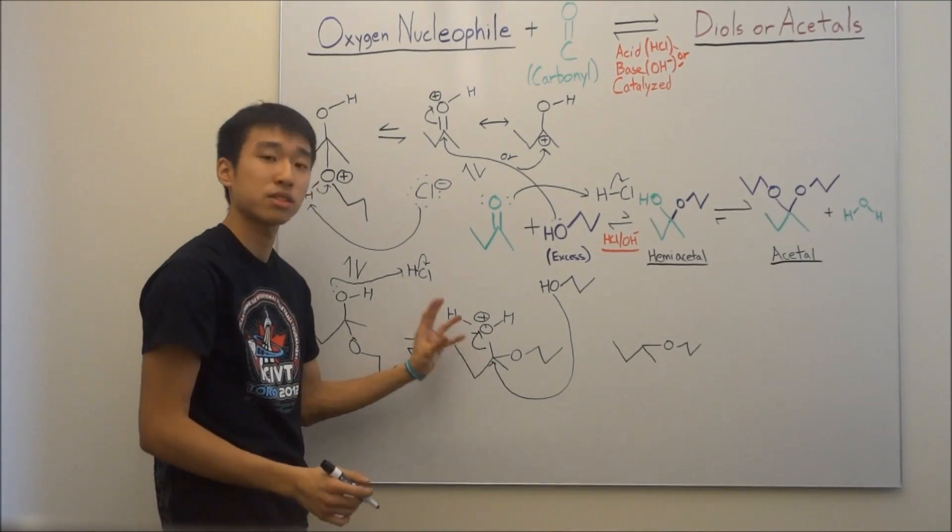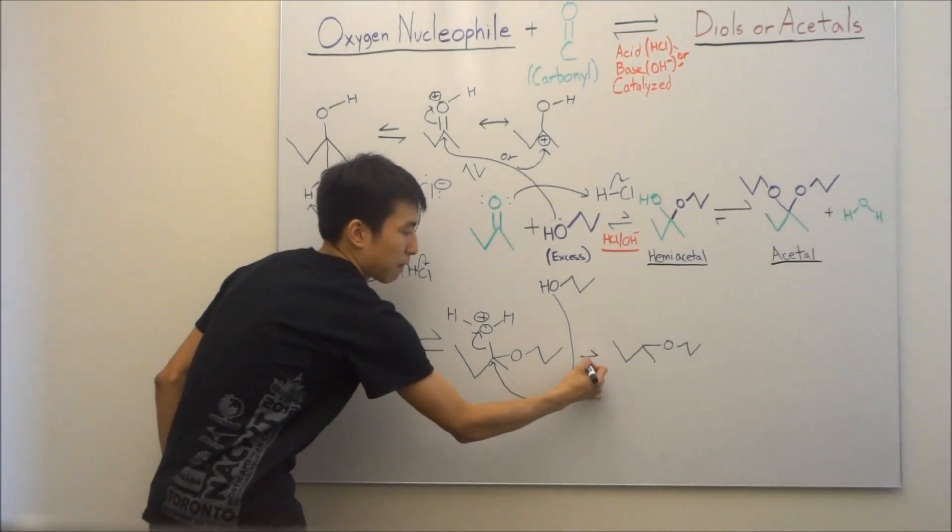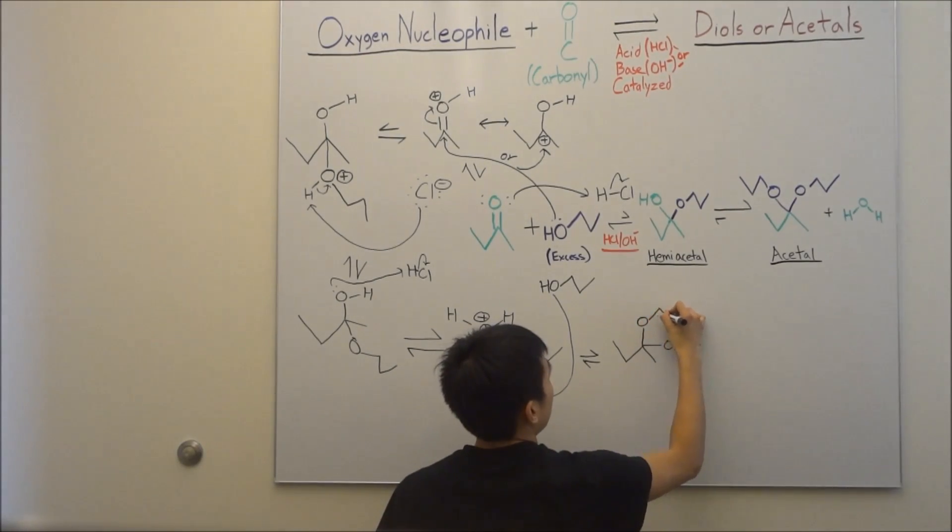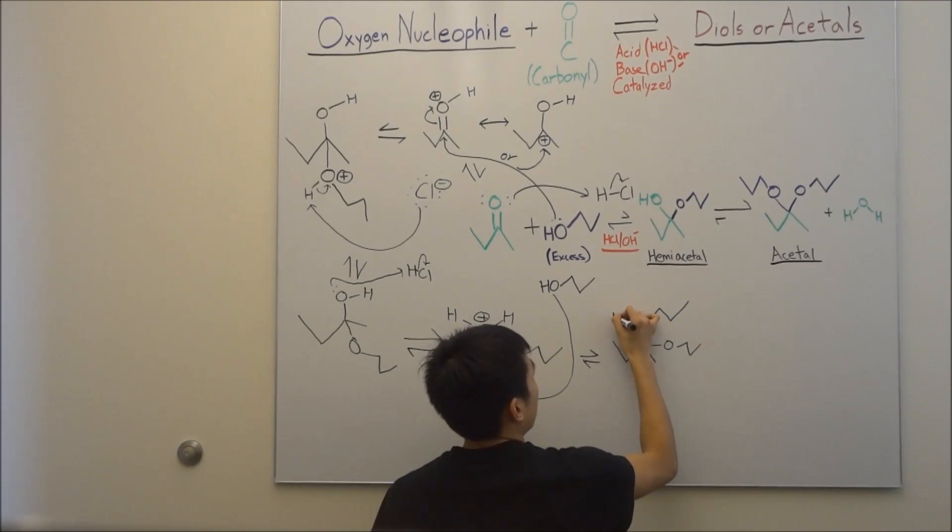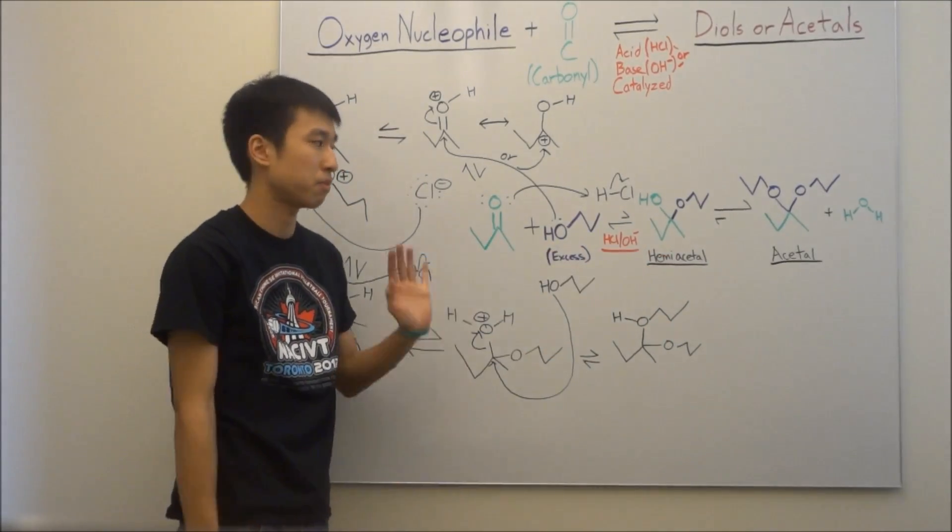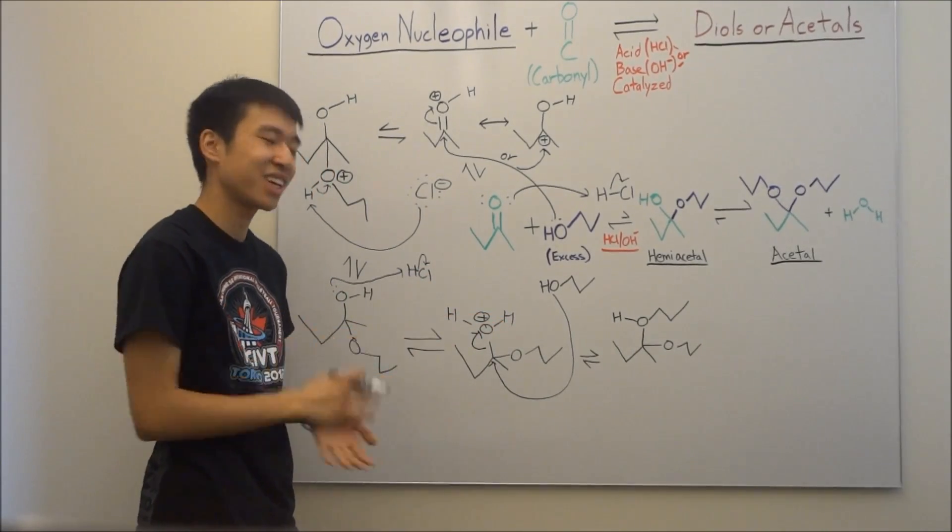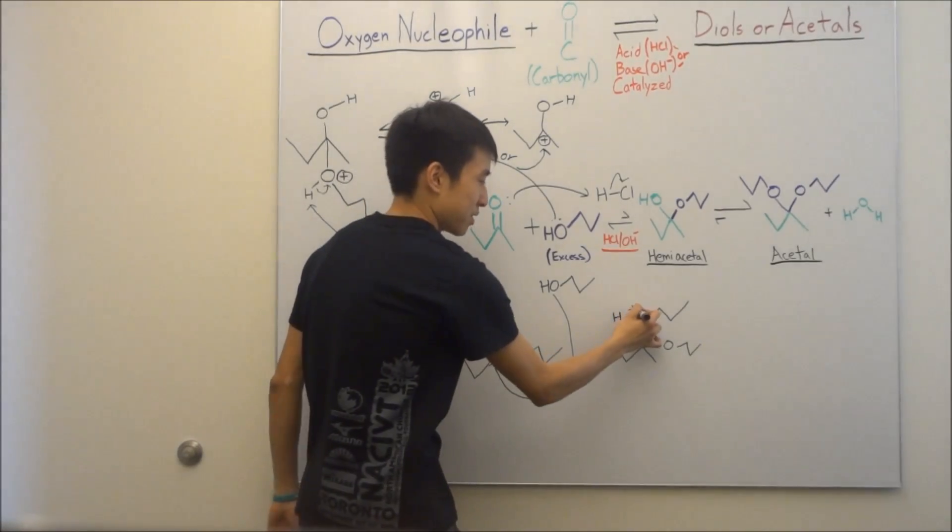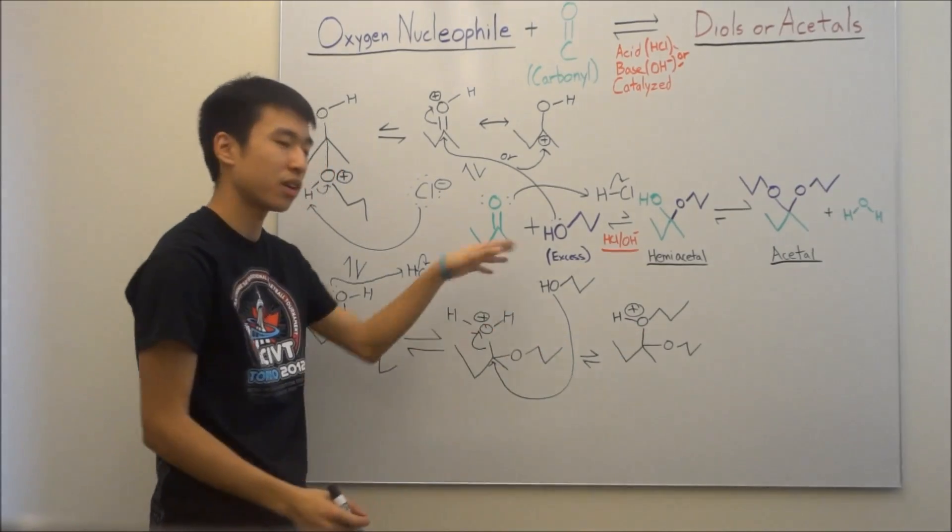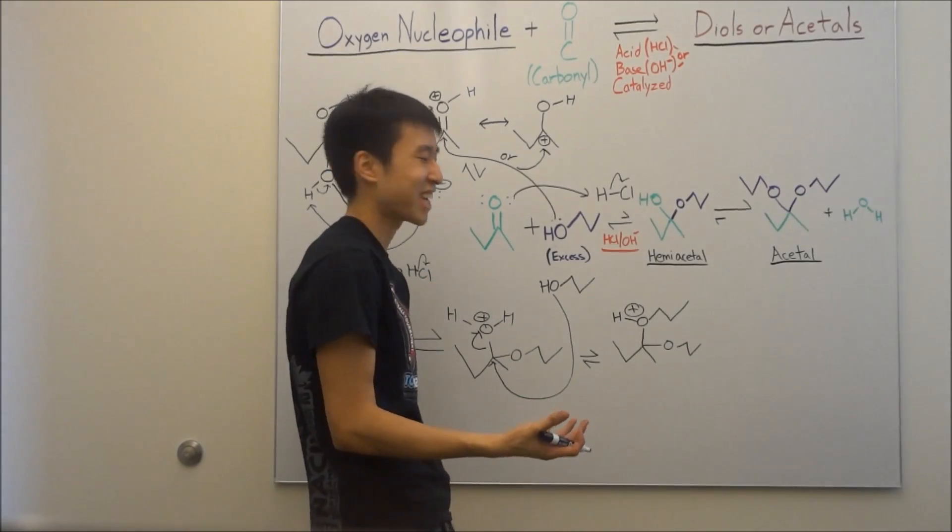This is much better because when you do this, you don't create a carbocation like before. Instead, you're going to create this molecule over here, which is really close to our acetal final product. But by the way, anything wrong here? You guys can probably really guess what's wrong. And it's the positive charge. Oxygen has two bonds. Now he has three bonds. He lost electrons from the bond. I'm pretty sure you guys are tired of me saying that over and over again.